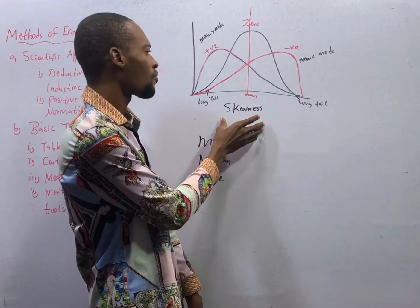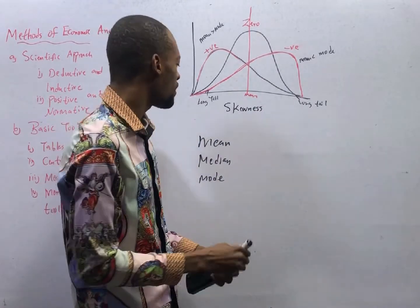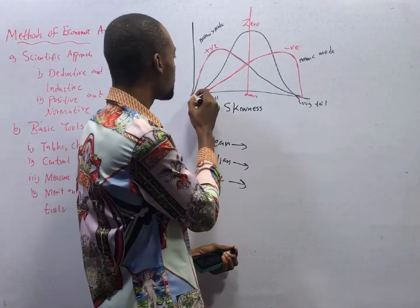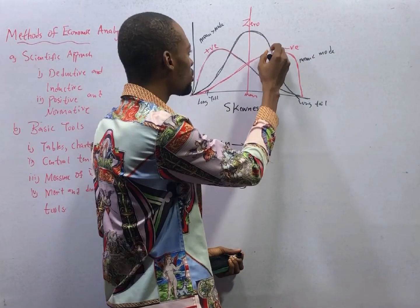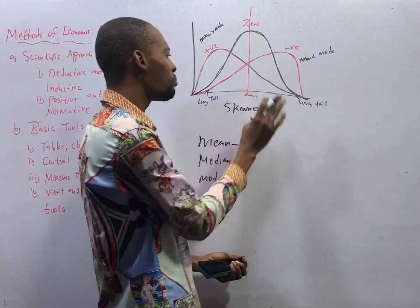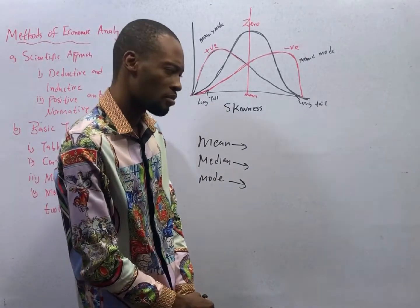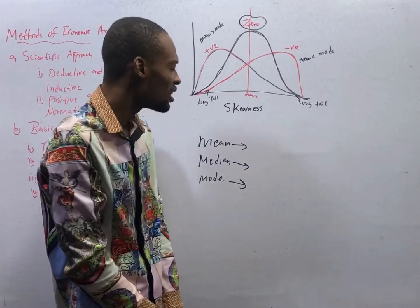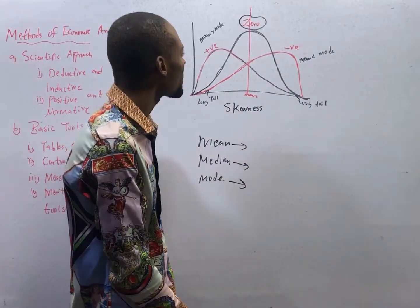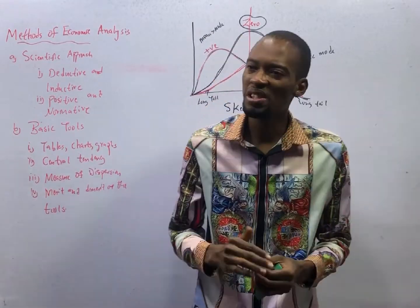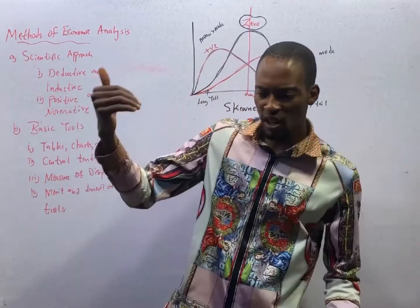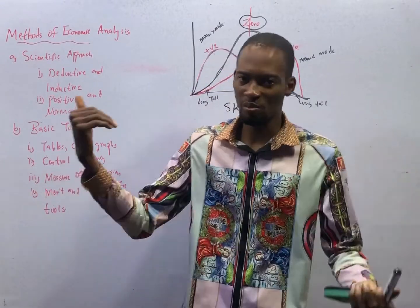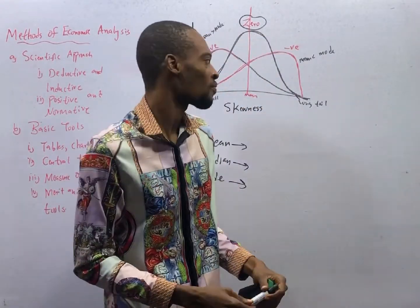Now skewness. In a normal distribution, the mean, median, and mode are the same. Therefore, in a normal distribution there is zero skewness — no skewness. The mean equals the mode. But it gets to a point where values begin to deviate from the mean position. That deviation from the mean position or from the normal distribution is what we refer to as skewness.